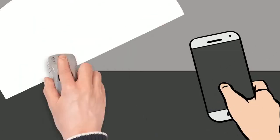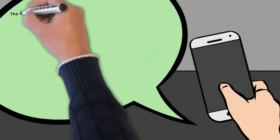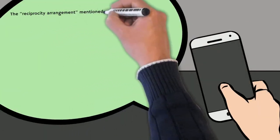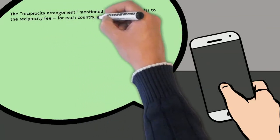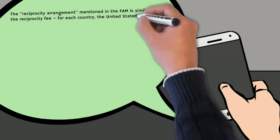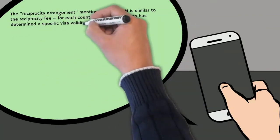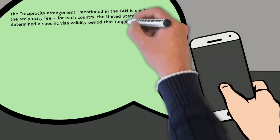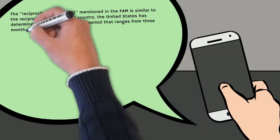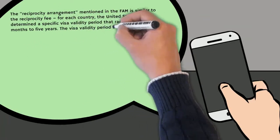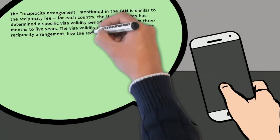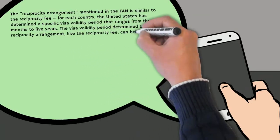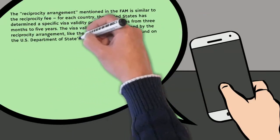The reciprocity arrangement mentioned in the FAM is similar to the reciprocity fee. For each country, the United States has determined a specific visa validity period that ranges from three months to five years. The visa validity period determined by the reciprocity arrangement, like the reciprocity fee, can be found on the U.S. Department of State's website. We have included a link in the description box below.